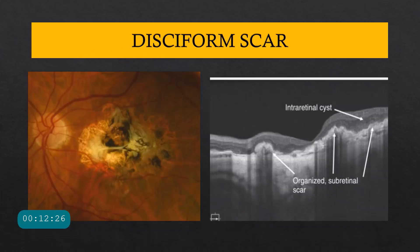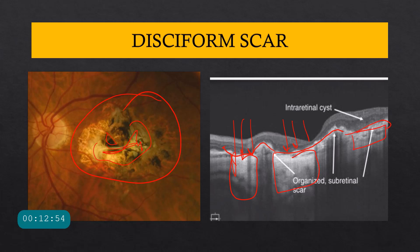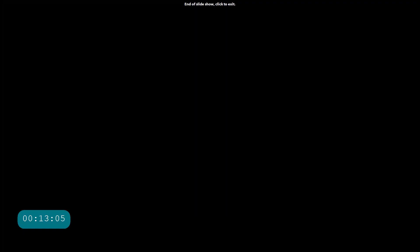The endpoint of wet ARMD is disciform scarring. On fundus you see a lot of pigmentation and fibrosis, which on OCT is represented as hyperreflective organized scar formation. The scar transmits more light, producing hyperreflectivity and a window/hypertransmission defect. Sometimes intraretinal fluid may also be present. The scars show this hypertransmission defect because of the window effect — and that's all for today, thank you.